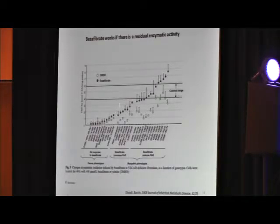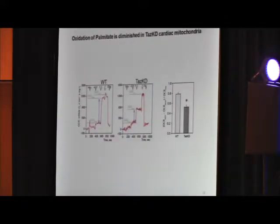But we have to keep in mind that bezafibrate works if there's residual activity present. For example, this is VLCAD-deficient fibroblasts from humans. VLCAD is a fatty acid oxidation enzyme. In this study, they measured fatty acid flux in the fibroblasts. If enzyme activity is zero, bezafibrate not much can do. However, if residual activity is present of the VLCAD, then bezafibrate can increase that activity, multiply it, and bring it up to normal level or even beyond.